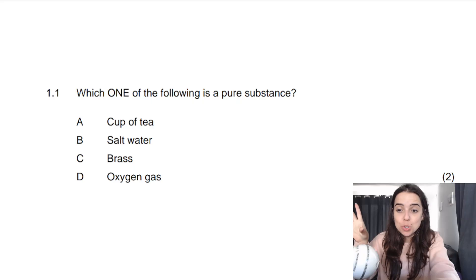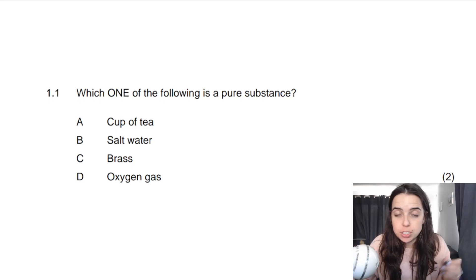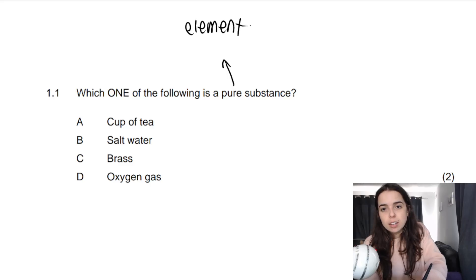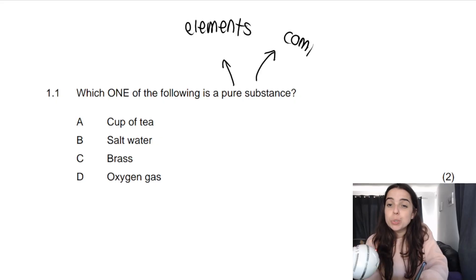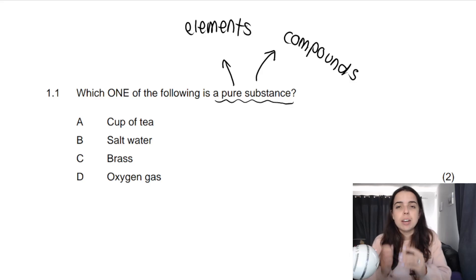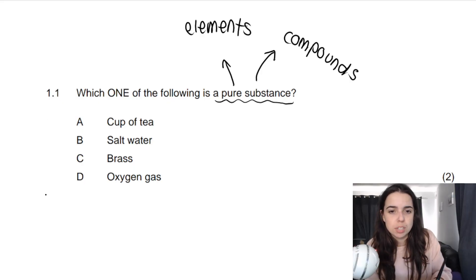Here's a multiple choice question from another exam paper: which of the following is a pure substance? Remember, pure substances can be divided into elements and compounds — molecules are compounds. Elements or compounds are pure substances. Mixtures are not pure substances.